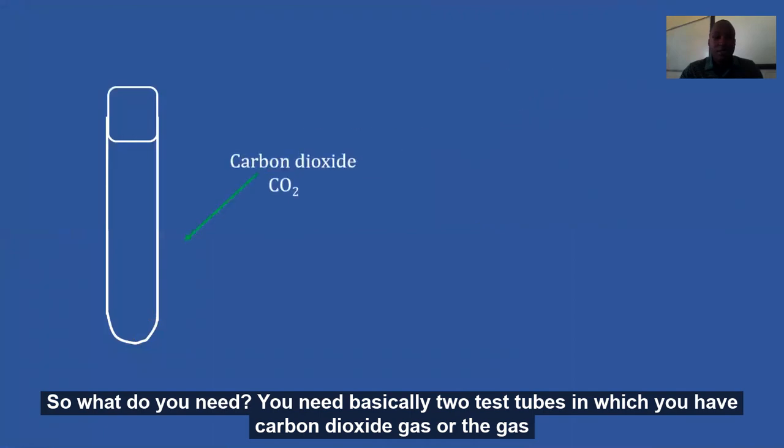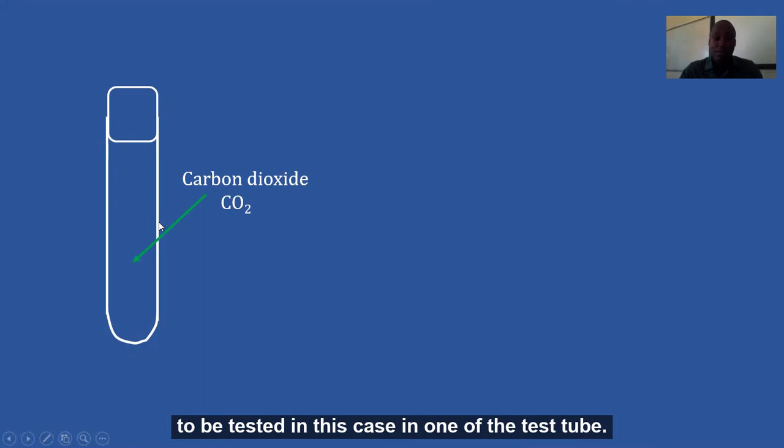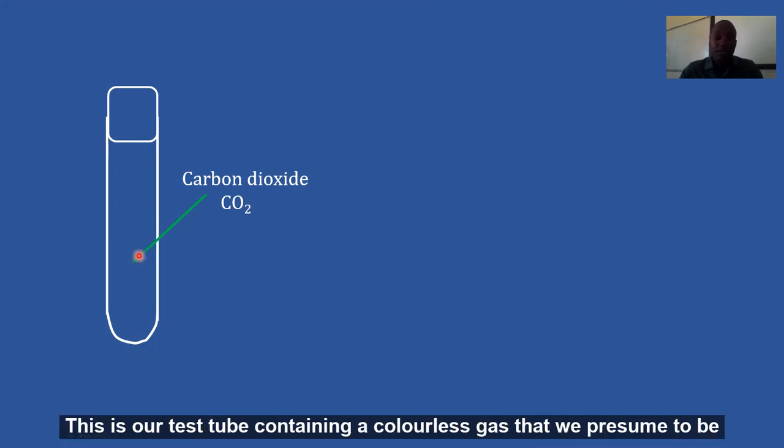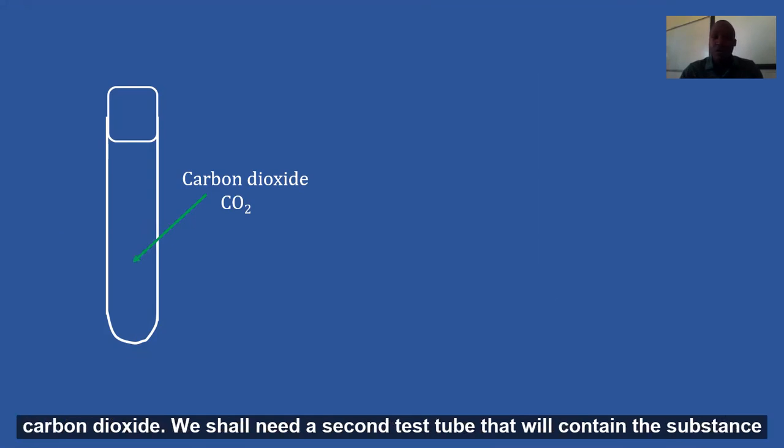So what do you need? You need basically two test tubes in which you have carbon dioxide gas or the gas to be tested. In this case, in one of the test tubes, this is our test tube containing a colorless gas that we presume to be carbon dioxide.